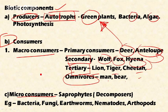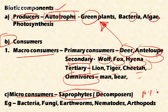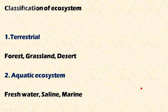Micro consumers are called saprophytes, which feed on dead and decayed plant and animal matter within the soil. They help in recycling the soil and sustaining nutrient cycles like the nitrogen, phosphorus, and potassium cycles. Bacteria, fungi, earthworms, nematodes, and arthropods are important components for plant growth and ecosystem health.